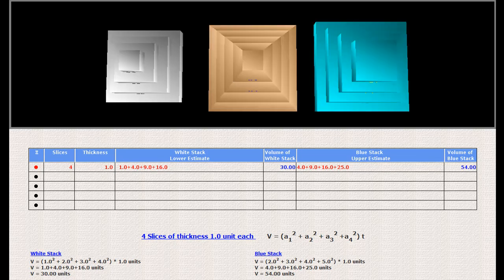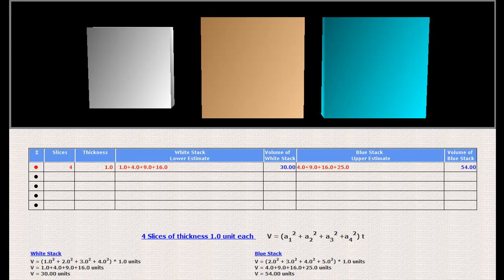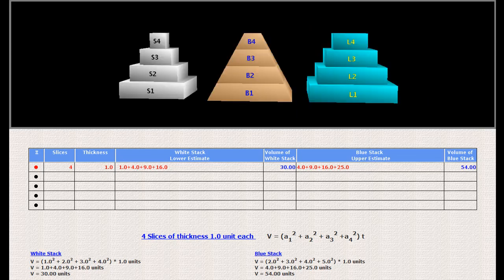The pyramid has a top face of 1 unit, a bottom face of 5 units, and a height of 4 units. Our interest is to calculate its volume.